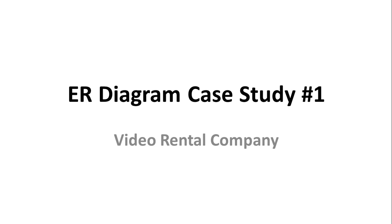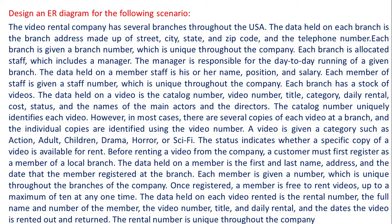In this video we will discuss how to design an ER diagram for a video rental company. We have to model an ER diagram based on the given scenario. To design an ER diagram we should identify entities, attributes, and the relationships between entities. An entity is an object that exists in the real world about which we store data, and it should be distinguishable from other objects. Attributes are properties of the entities, and relationship represents some association among entities. As a general guideline, nouns are candidates for entities and verb phrases are candidates for relationships.